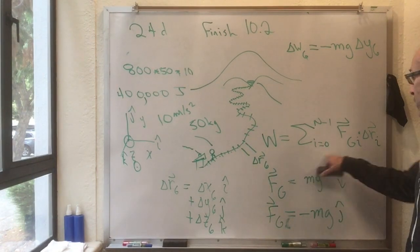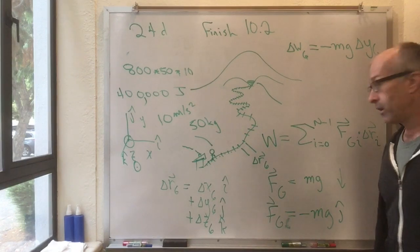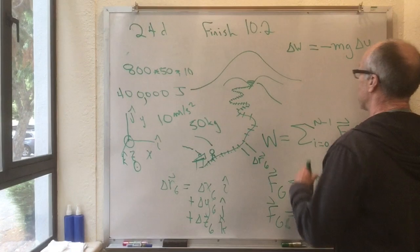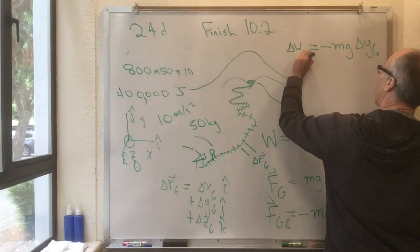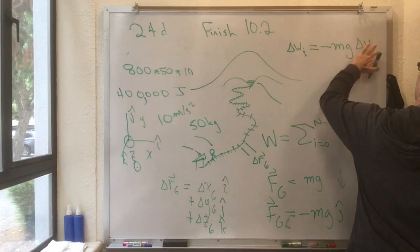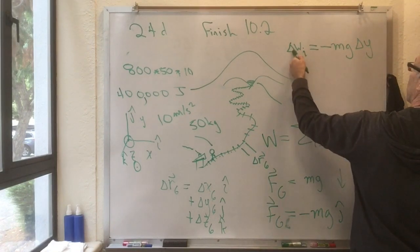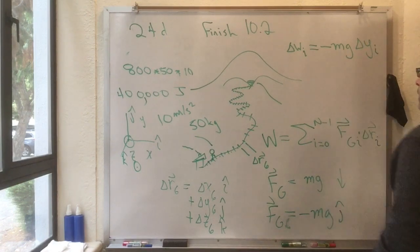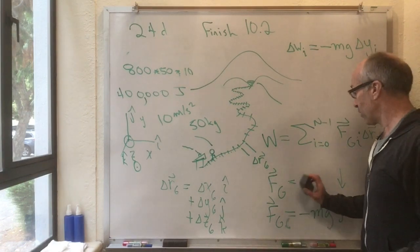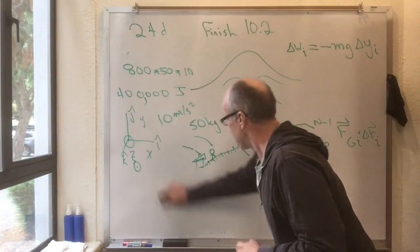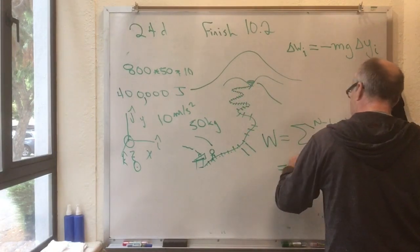Well, that makes this sum a whole load easier. Because this is true for any of the path segments, I just used 6 to make it a nice easy example. For all the path segments, the little bit of work done on path segment I is just delta y sub i. So, that's pretty easy.